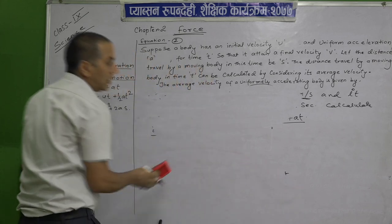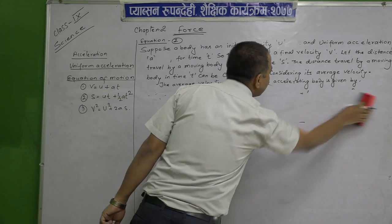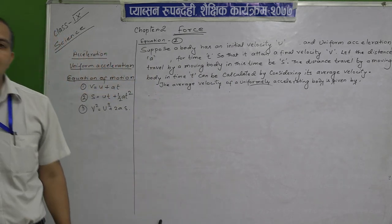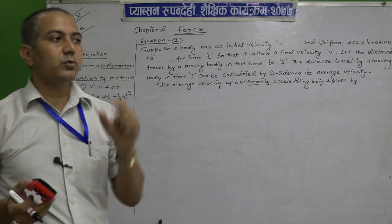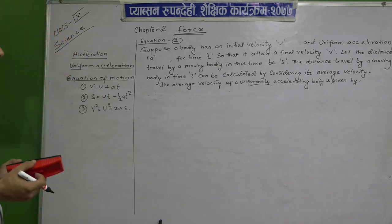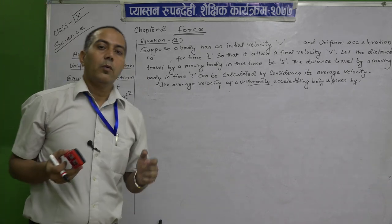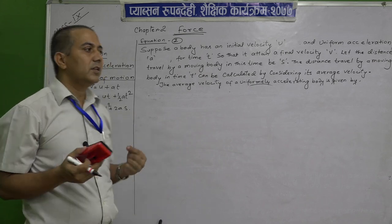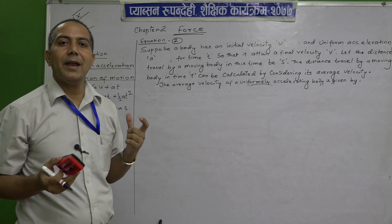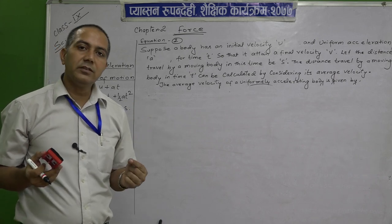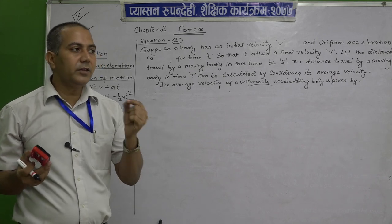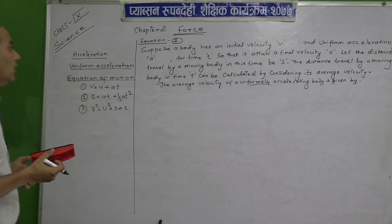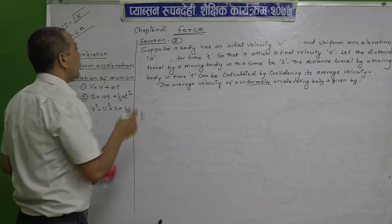This formula is used to calculate the final velocity when acceleration, initial velocity, and time are given. We can also use it for any of the four parameters — if final velocity, u, and t are given, we can find out a. Now let us move to equation 2.